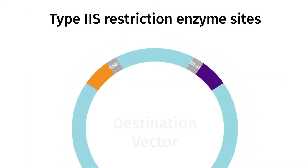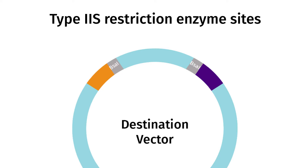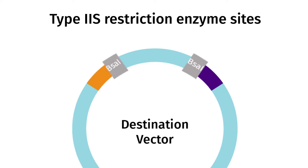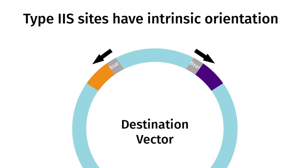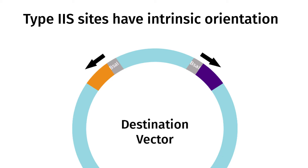The type 2S restriction enzymes most commonly used for Golden Gate assembly are BSA1, BSMB1, and BBSB1, all of which create a four nucleotide, three prime recessed overhang. The orientation of type 2S enzymes, recognition, and fusion sites is critical to the success of Golden Gate assembly.